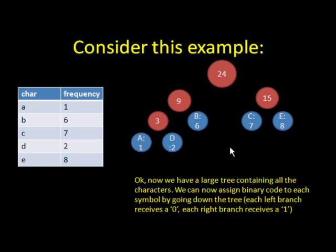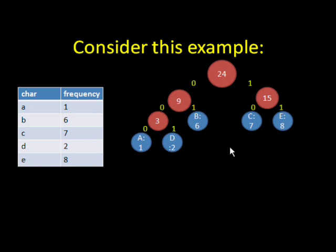Okay, now that we have a large tree containing all the characters, we can assign binary code to each symbol. To do this, we are going to go down each branch of the tree and assign a zero every time we go down the left branch and a one every time we go down the right branch. So what that means is, it would look like this.